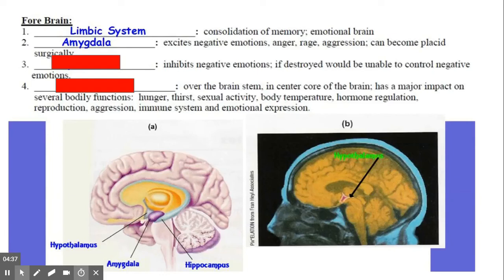It excites negative emotions, so your emotions of anger, rage, and aggression are all part of that. If there would be damage to the amygdala, then that part of our emotional cycle becomes very placid. In other words, you wouldn't be able to show anger or rage or be aggressive.